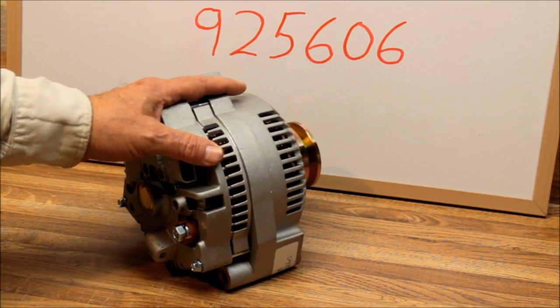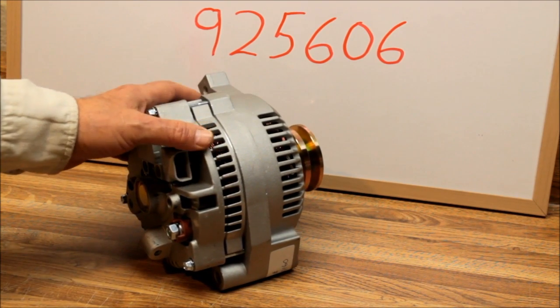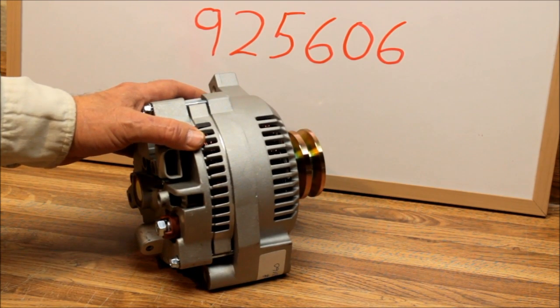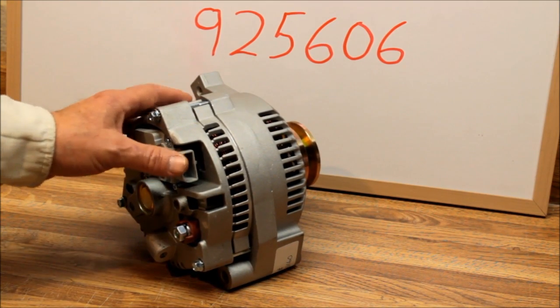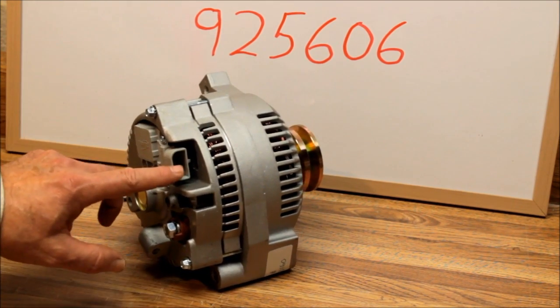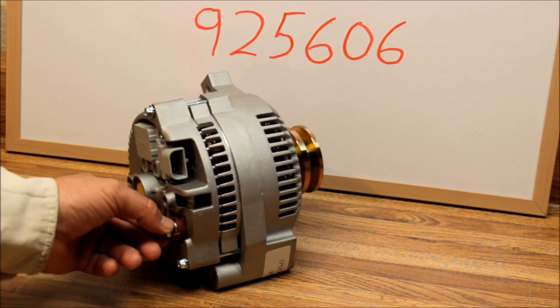This will also replace the 2G series, which was one of the first internal regulated units that Ford had. The 1G series has two plug-ins - it's got a regulator plug-in, then instead of the battery post on the 2G they have a power plug.